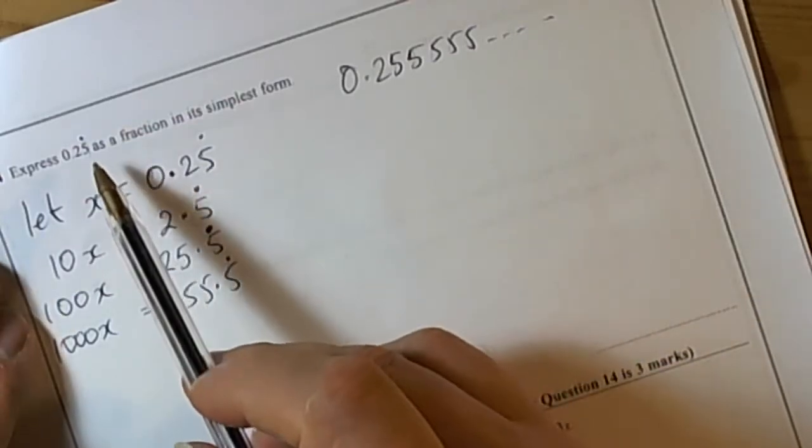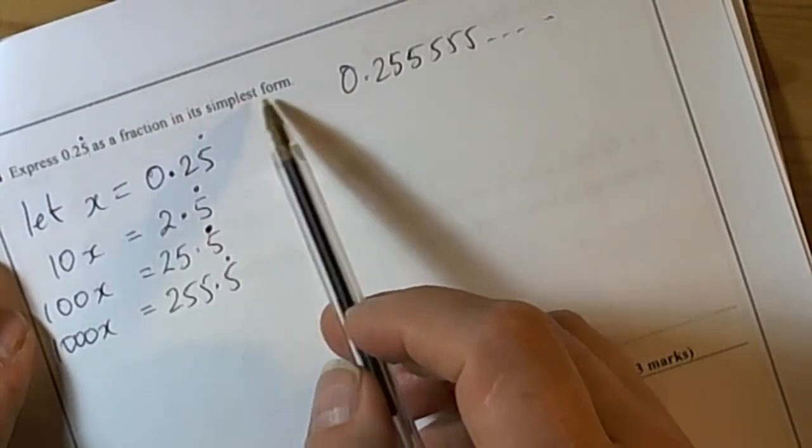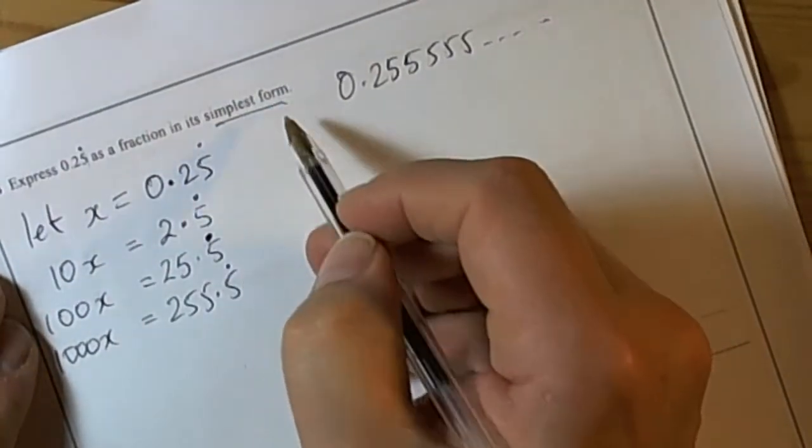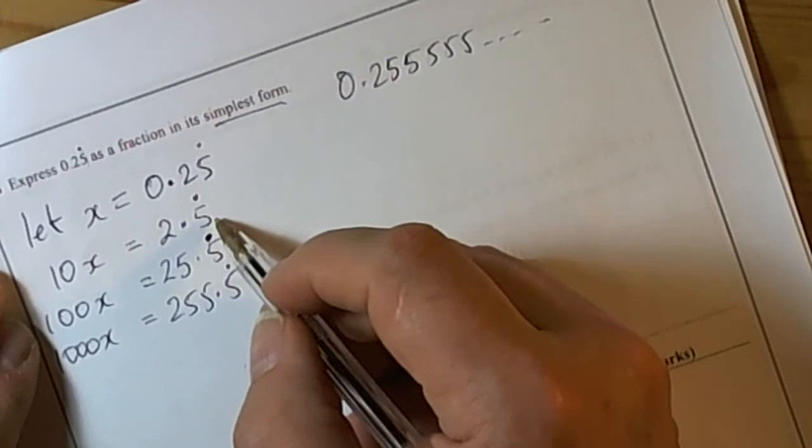Just a quick review of how to change a recurring decimal into a fraction in simplest form. The classic way of doing this is to let x equal the recurring decimal, and then the aim is